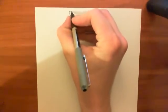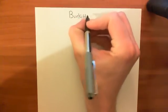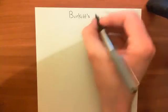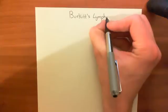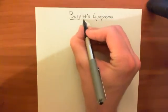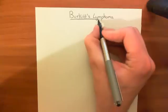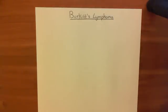Welcome to this next video in the playlist on cancer. In this video, we're going to look at Burkitt's lymphoma. Burkitt's lymphoma is a very nice example of a gain-of-function mutation that is due to the translocation of a proto-oncogene, so that it is now regulated by the promoter region of another gene. That promoter region is far more active, so you get overexpression of the proto-oncogene, turning it into an oncogene and giving it a gain-of-function mutation.